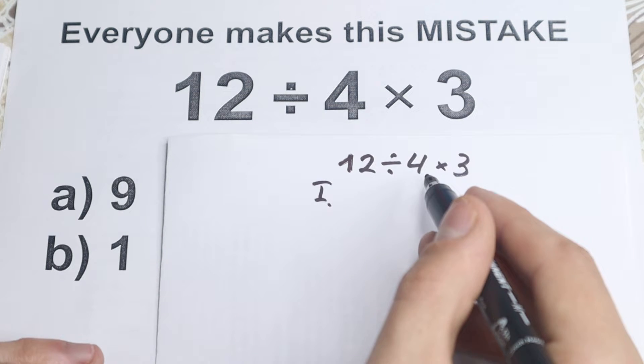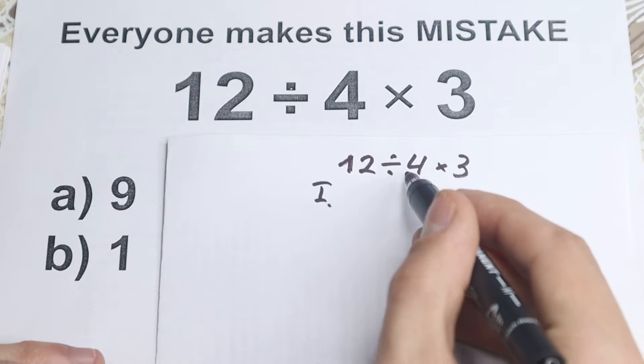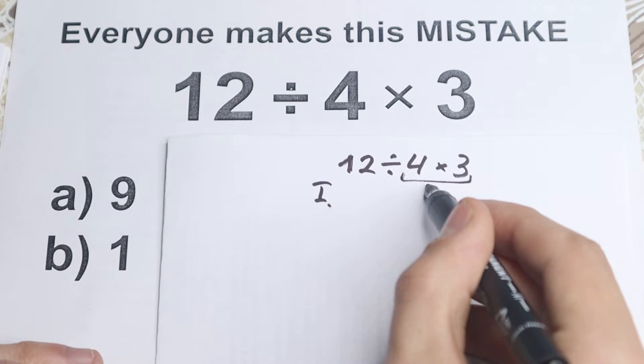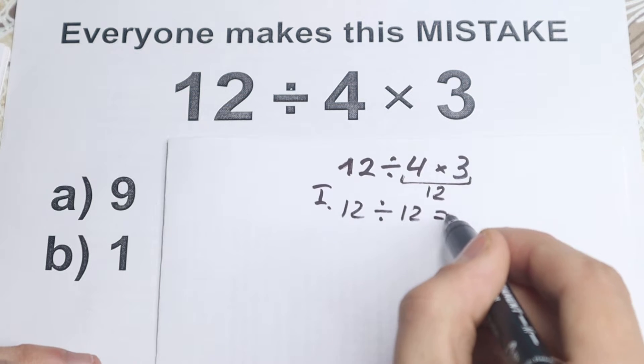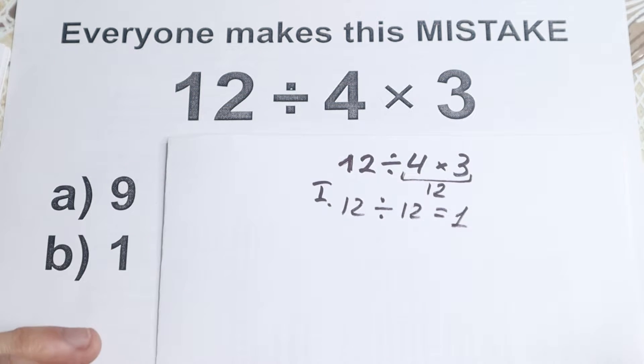So 4 times 3, 4 times 3 equal to 12. A lot of students start with this multiplication. So 12 divided by 12 equal to 1. So this is the first approach to this problem.